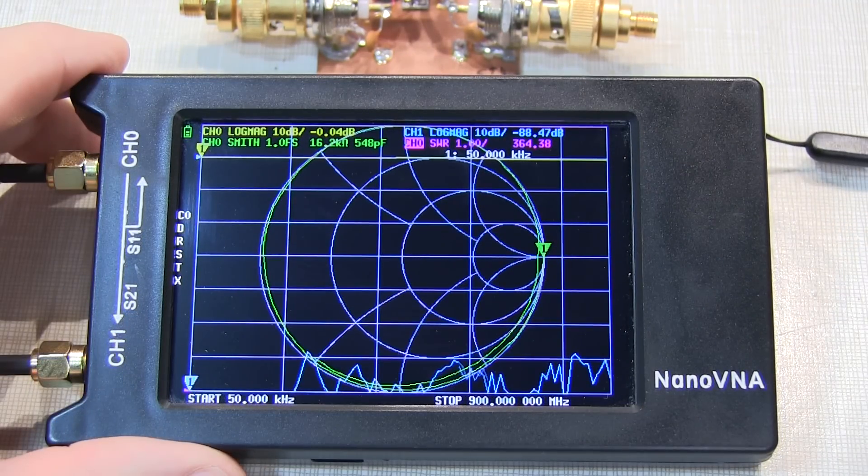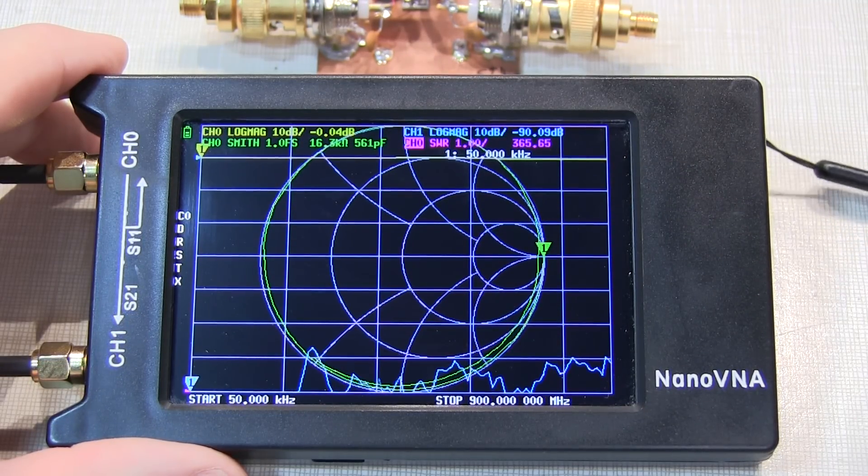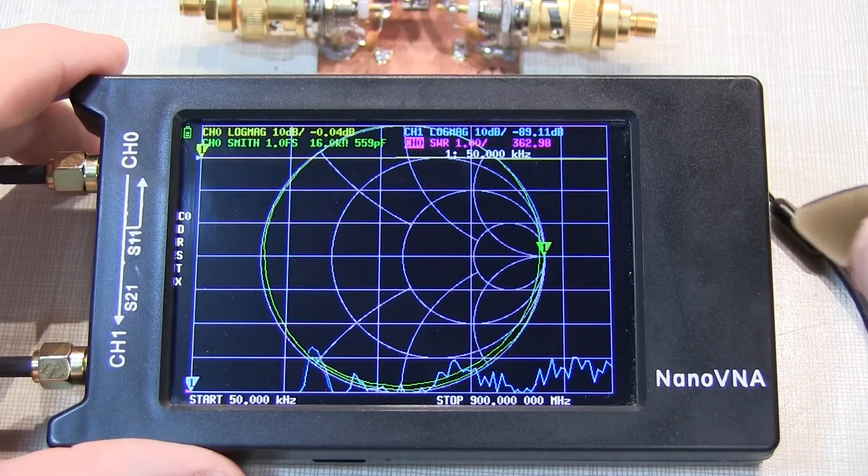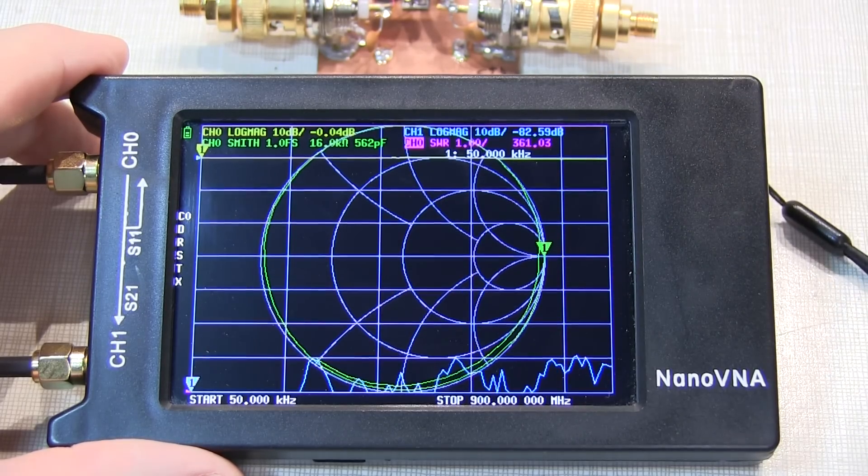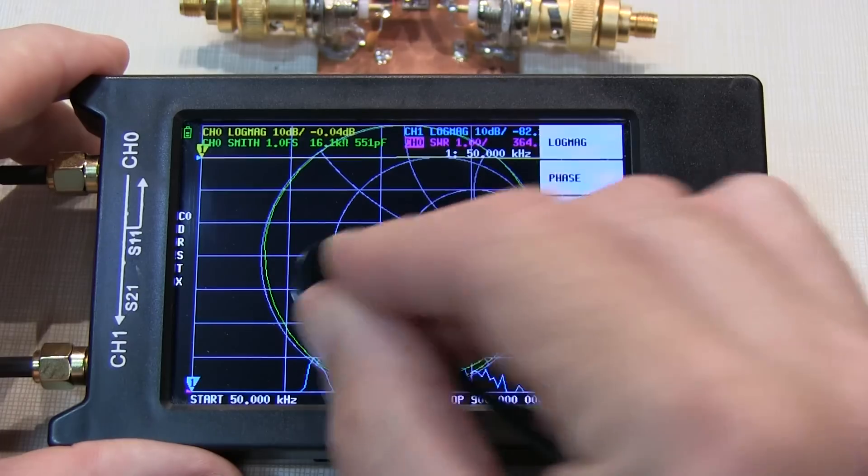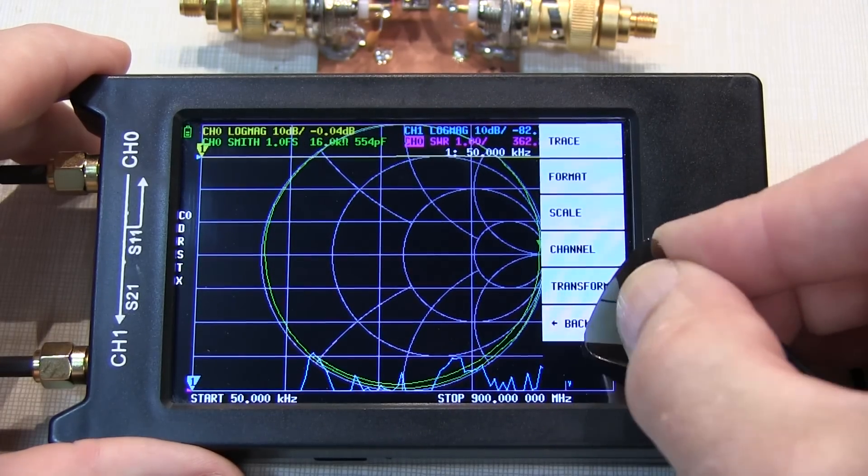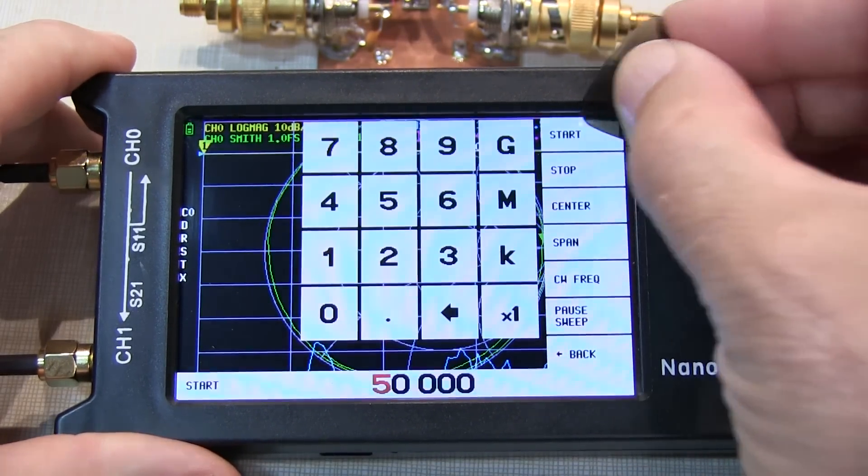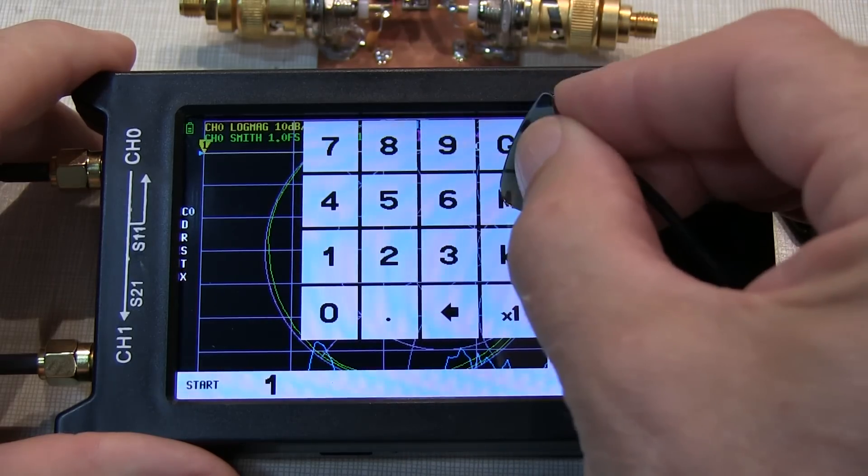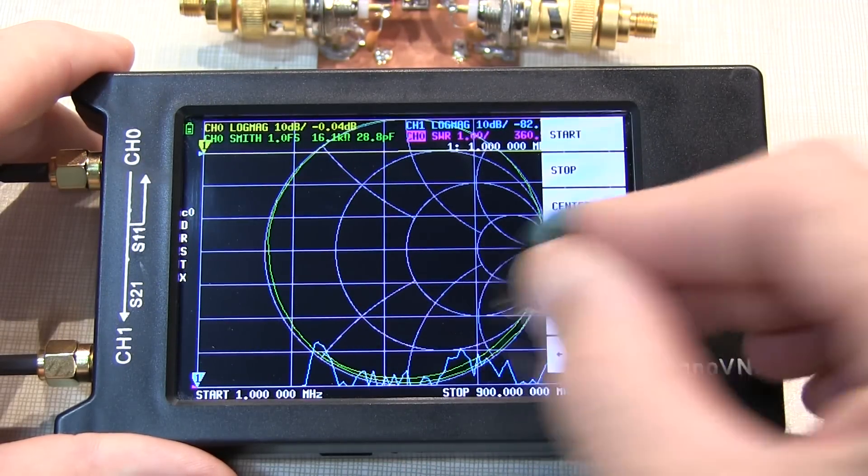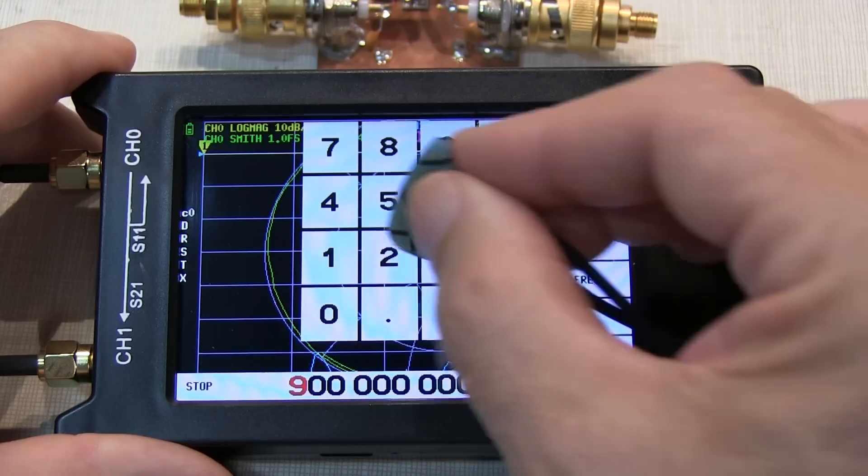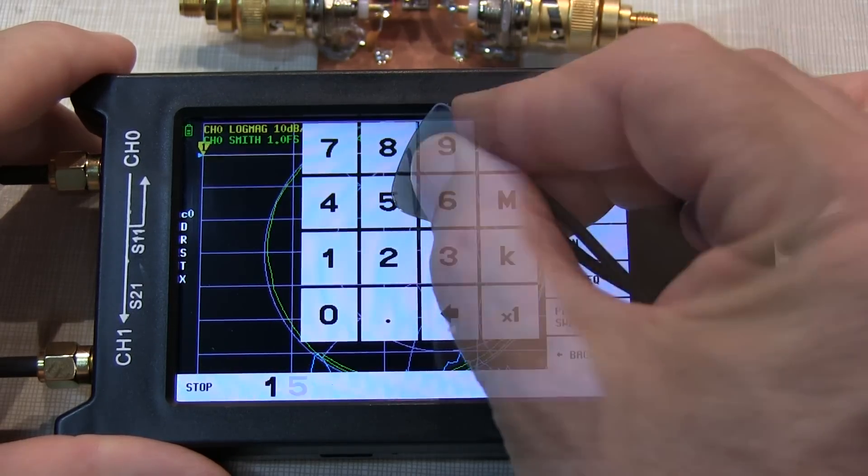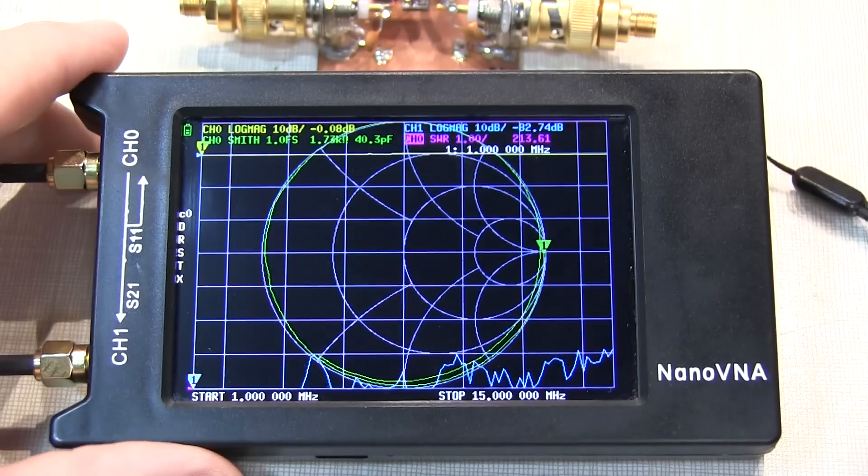Now we want to sweep this filter from about 1 MHz out to 15 MHz. That'll cover looking at the second and third harmonic of our 3.5 MHz transmitter. So we bring up the menu, and we'll go back to the beginning, select stimulus, set our start frequency to 1 MHz, back to the menu, set the stop frequency to 15 MHz, and now we have the sweep set up.